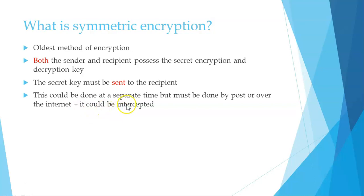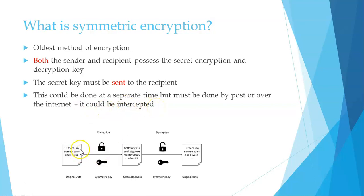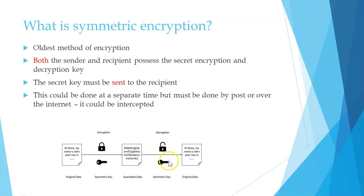For example, the original data might be a message like 'Hi there, my name is John.' The symmetric key encrypts this message so that it becomes meaningless scrambled data. But once it reaches the recipient, the symmetric key is then used to decrypt this message back into the original message: 'Hi there, my name is John.' That's a basic example of how symmetric encryption works.